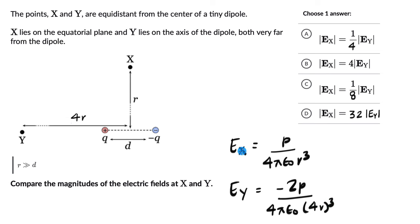Looking at the magnitudes of EX and EY, we get rid of the minus sign. We see there are factors involved in the electric field at point Y on the axis. This factor is 2 divided by 4³, which is 64, so 2/64 or 1/32.